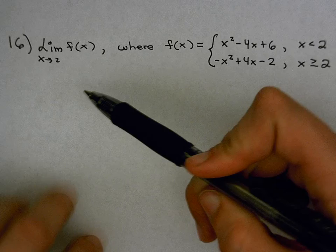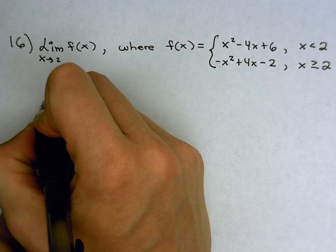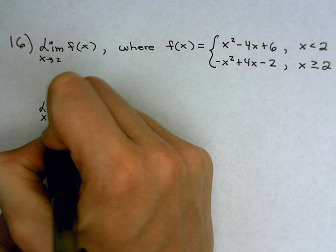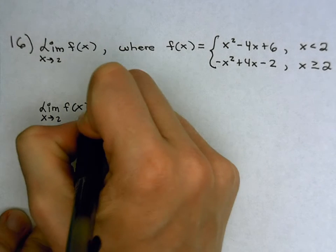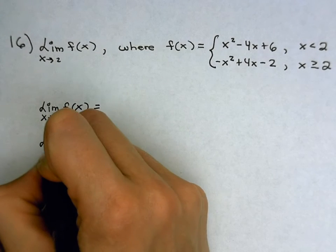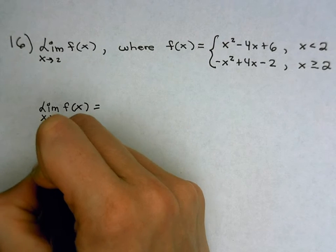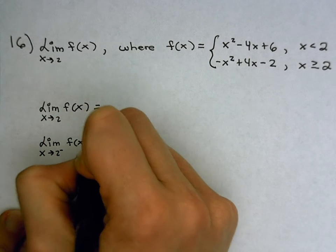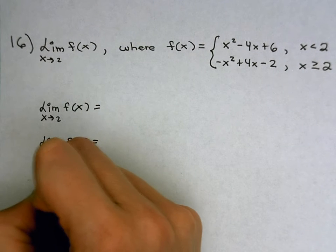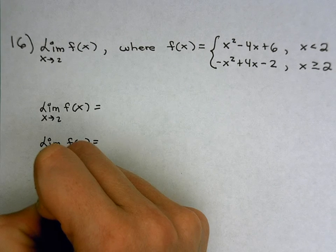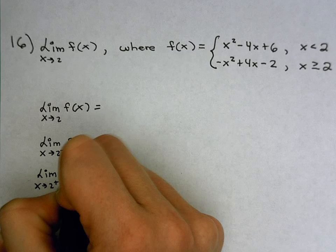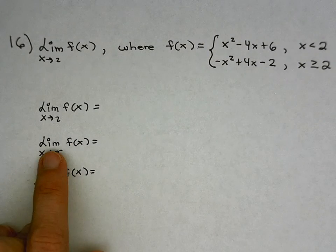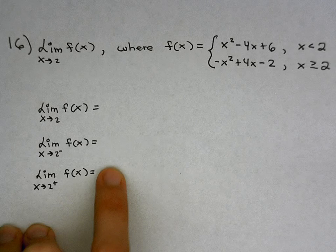Because they ask us for the limit as x approaches 2, we have to look at both sides. So I'm going to do the limit as x approaches 2. But we can't answer that unless we first answer, what is the limit as x approaches 2 from the left? And what is the limit as x approaches 2 from the right? If when I look at this function from the left and from the right, if I get the same number, then that's my overall limit.